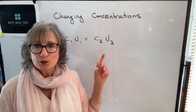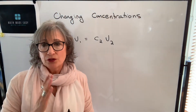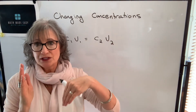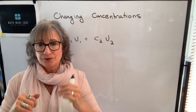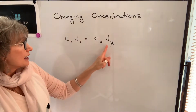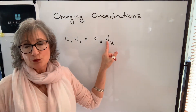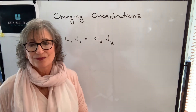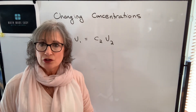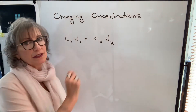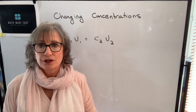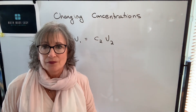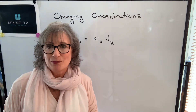This is an inverse proportion, meaning as one value increases, the other decreases, or vice versa. So as our volume gets larger because we're adding more diluent, the concentration gets smaller. When doing changing concentration questions, you'll know three of these values and be asked to find the fourth. The key to doing them properly is getting your units correct. Let's look at some examples.